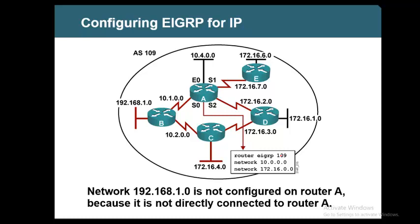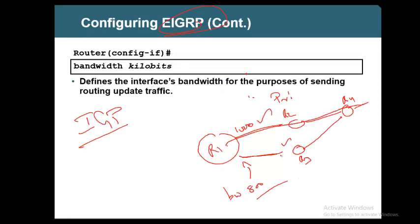R1 can go via R2 to R4, and R1 can go via R3 to R4. Both R2 and R3 are advertising the metric they have to reach destination R4. Now, what is the successor value in R1? The successor value is the lowest feasible distance. You have a feasible distance via R2 as well as via R3. The lowest FD is what is called the successor value — it is the FD of the elected route.